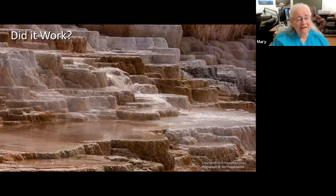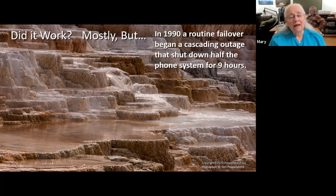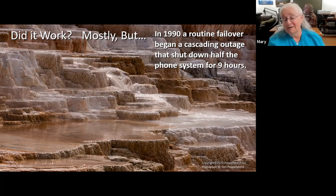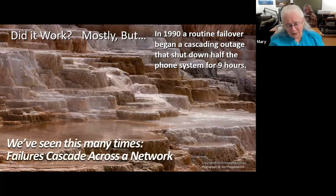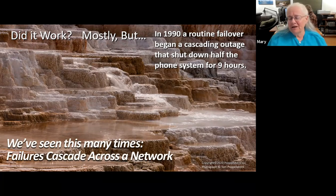Did they make it? The project manager published an article in Computer magazine some years later and said yes, certainly. But in 1990, there was a routine failover, and it began a cascading outage that went from one substation to the next. Pretty much half of the phone system in the US was down for nine hours. People thought it was a terrorist attack. We've seen this concept: you think you have a super reliable component in a network, but if it fails and the failure propagates, you almost can't stop it. We've seen electrical grids go out this way.